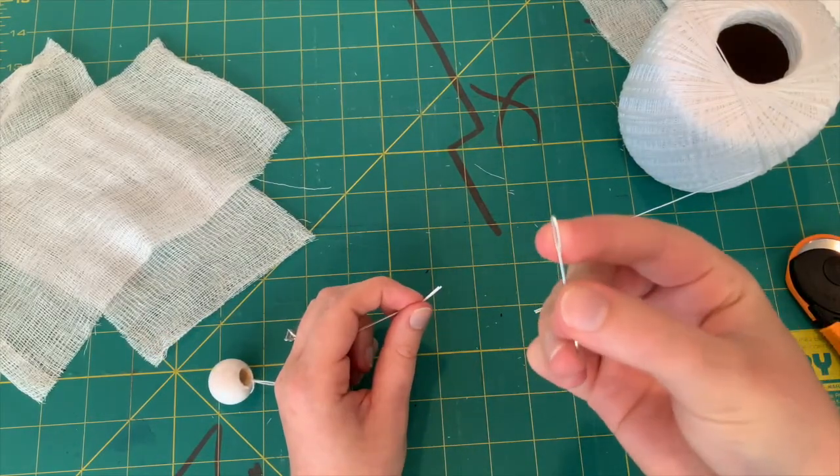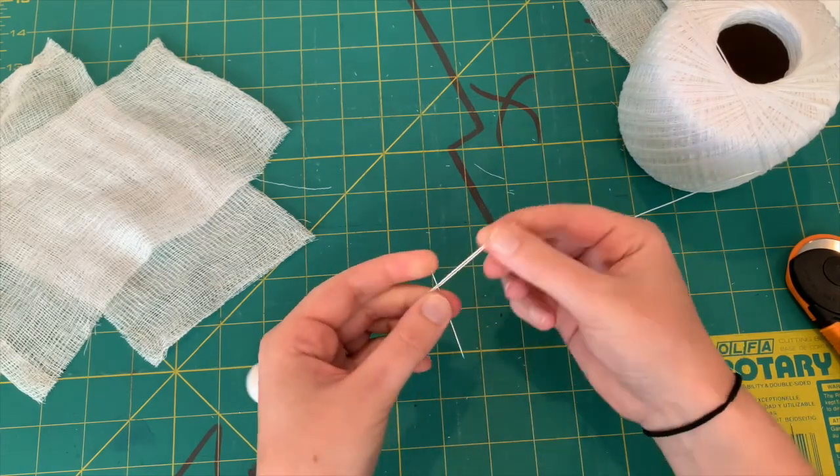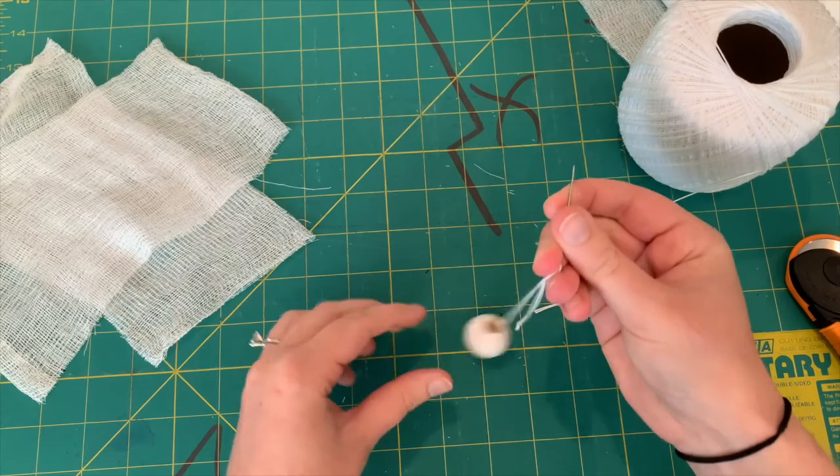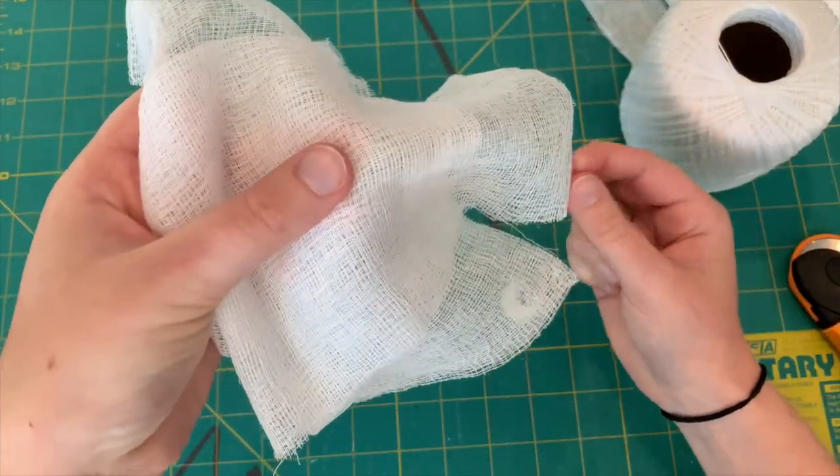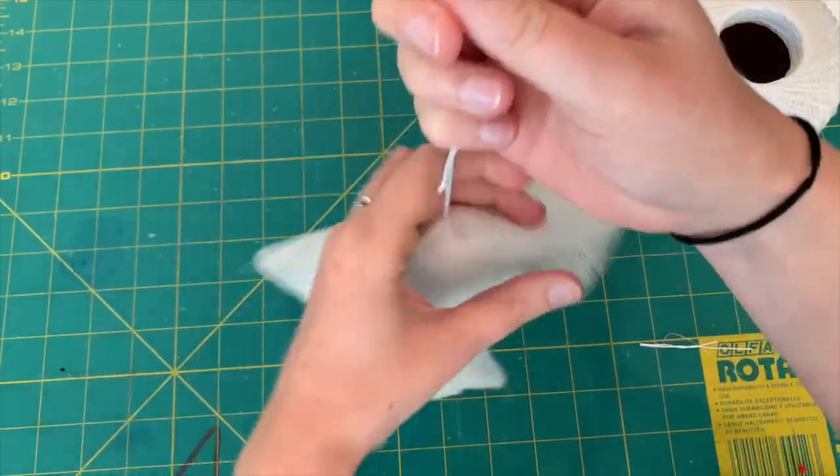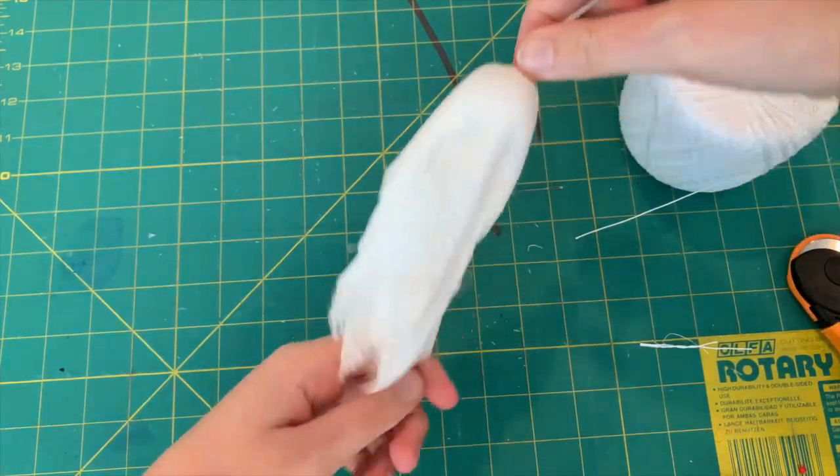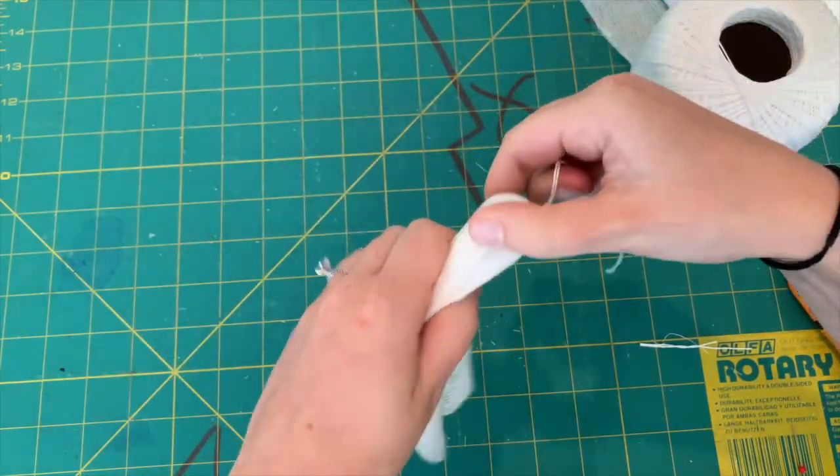Now thread the needle. Push the needle through the center of the cheesecloth. You now have a little ghost body.